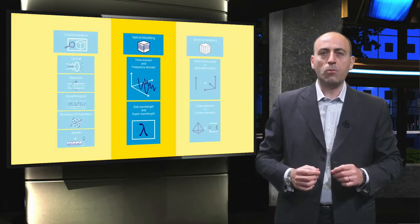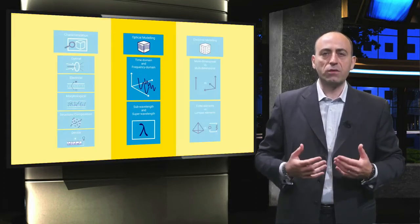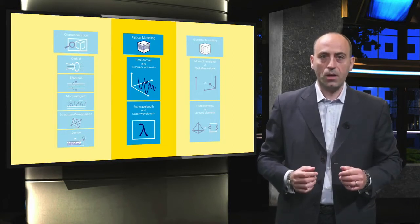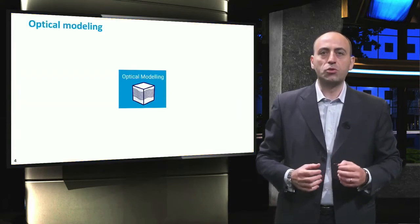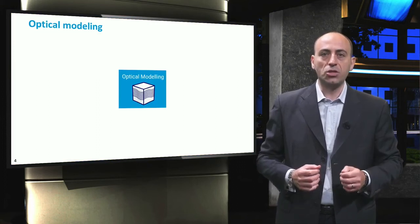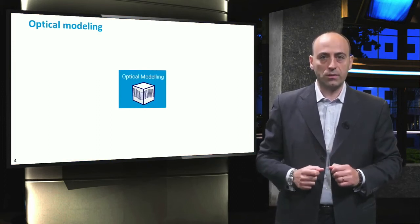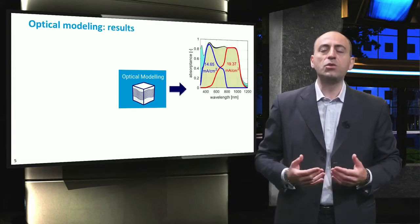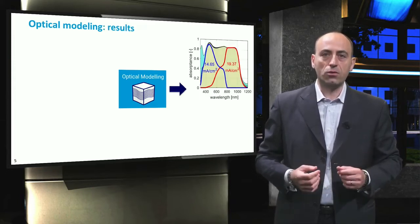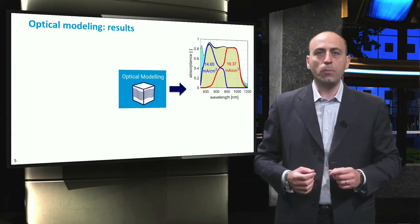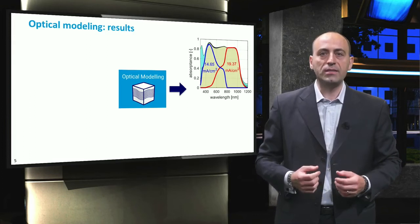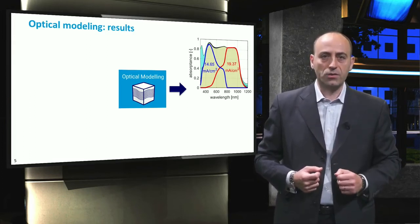With the term optical modeling, we indicate the series of steps necessary to model the optical performance of a solar cell. This performance is normally quantified by the absorption, reflection, and transmission in all layers of the solar cells. These three quantities allow to determine the useful absorption in the active layer of the device and the optical losses expressed by reflection and transmission of the device and by parasitic absorption in supporting layers.